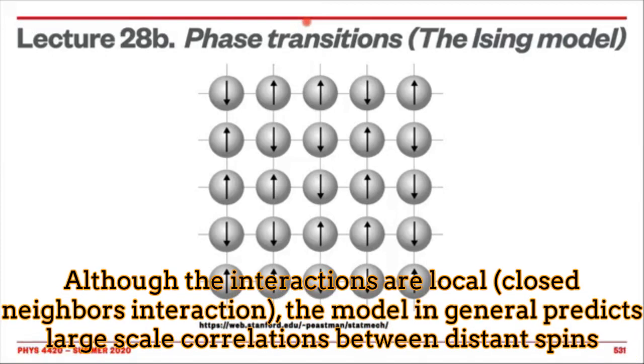Something really interesting about the Ising Model is that even if we start analyzing just close neighbor interactions, at the end the results show that there is some kind of correlation between distant particles. This is a natural consequence of quantum mechanics.